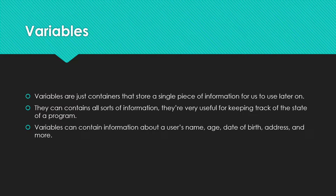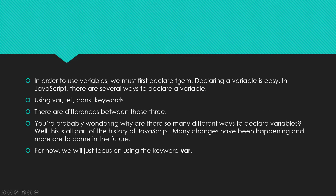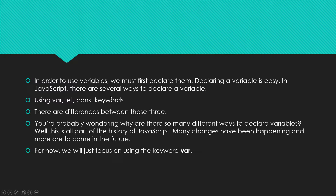Variables can contain information about a user's name, their age, date of birth, address, and more. In order to use variables, we first must declare them. Declaring a variable is very easy. In JavaScript, there are several ways to declare a variable. There are three reserved keywords interpreted by the JavaScript interpreter: we can use the var keyword, the let keyword, or the const keyword to declare our variables. For now, we're going to be using var just for simplicity.